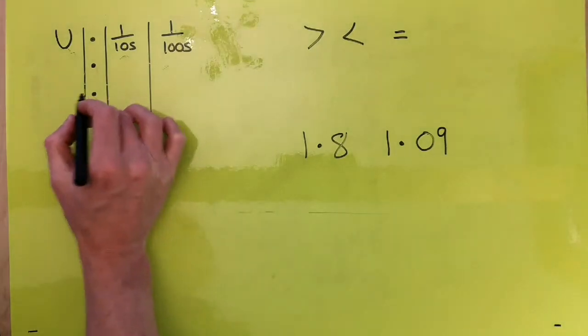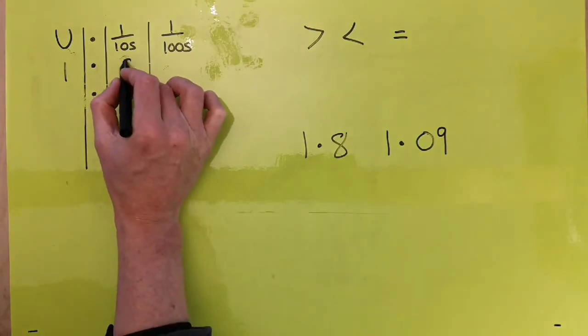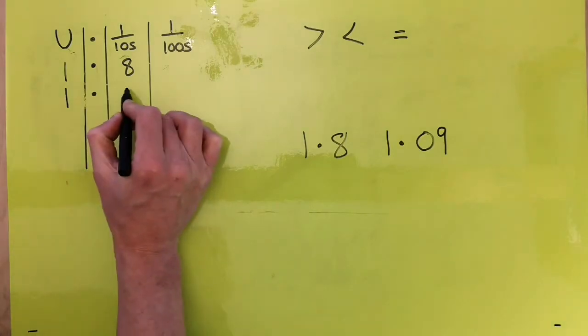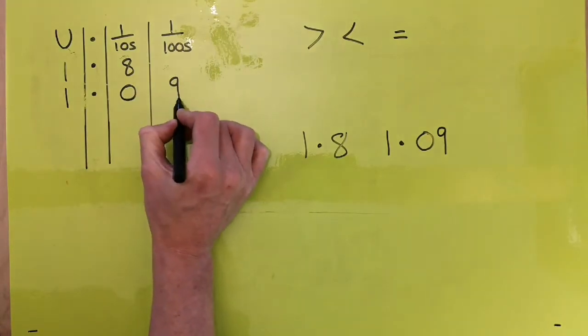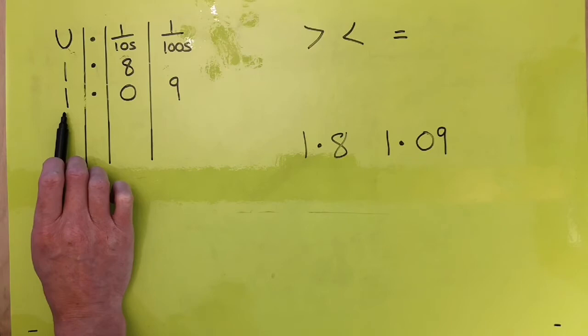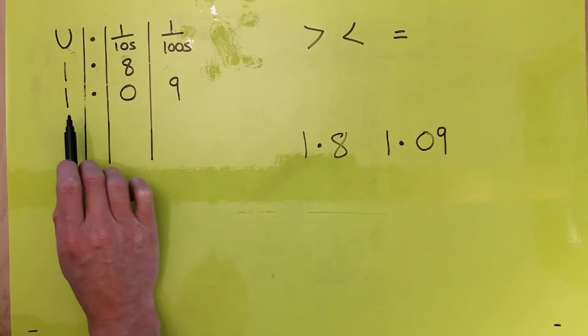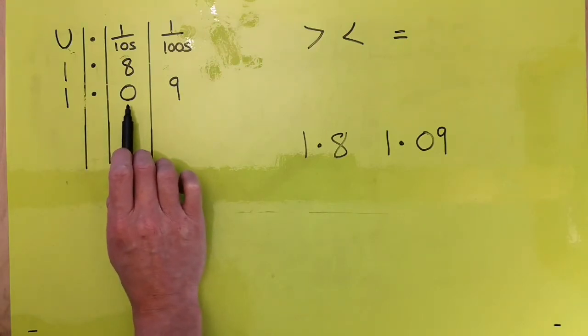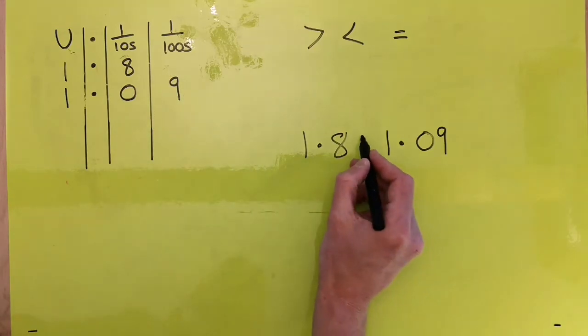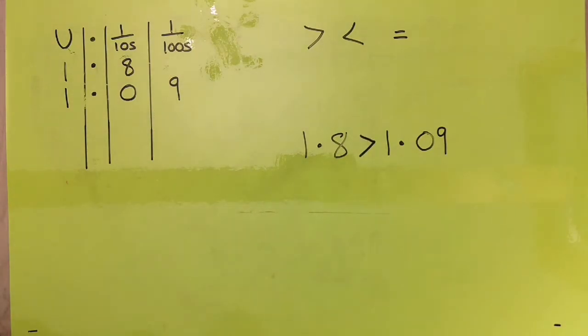So same again then, if we put our numbers into our place value chart over here, you've got 1.8 and we've got 1.09. So again, starting in this column here on this left, we can see they've both got the same amount of units, so we can't judge whether one is bigger than the other at this point. And then if we move to this column, we can see that this 1.8 has got 8 tenths and this has got 0 tenths. So again, because this column is bigger than this column, 1.8 must be the largest number.